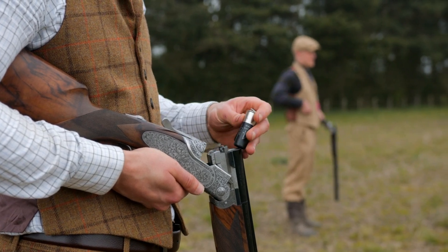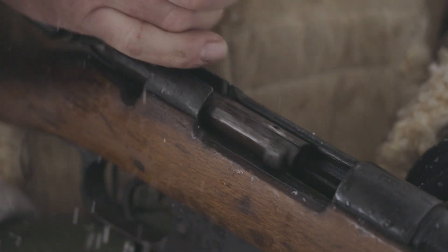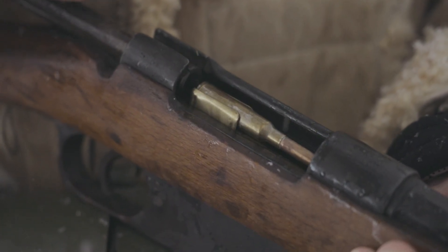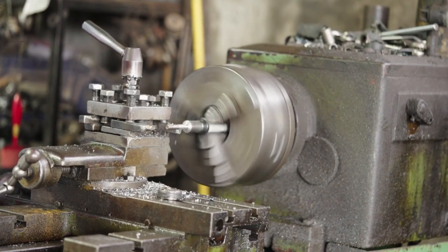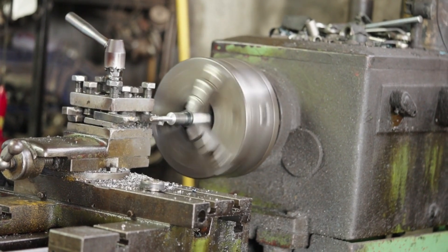The cartridge case, typically brass, holds the bullet and withstands firing pressure. The shape depends on the intended gun. Brass sheets are shaped by punches and dies, then heat treated for strength. Some cases receive a nickel coating for added durability and rust protection.